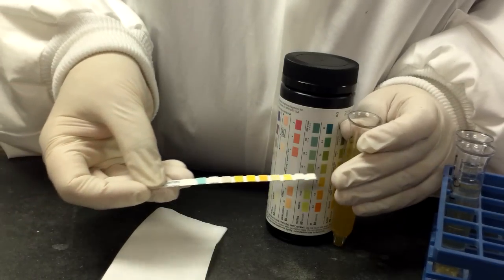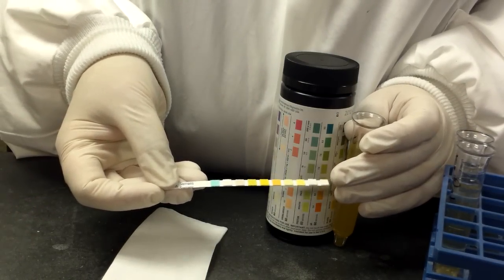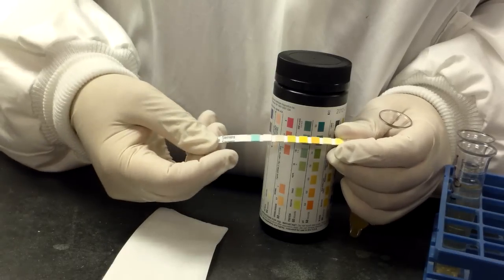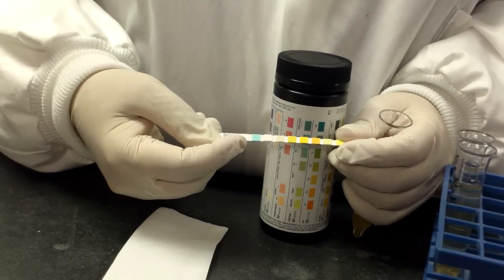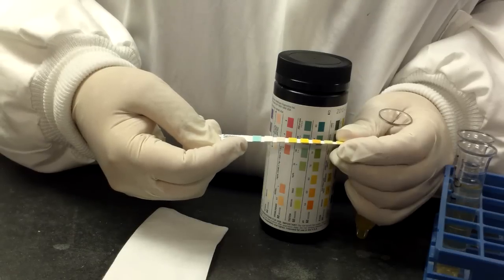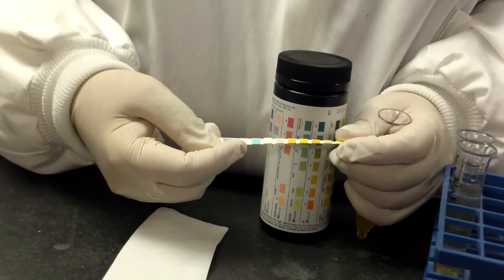When you put it in, you want to make sure you get all of the squares damp. And on this particular one, there is a small white square right here that is used by the analyzer for color comparison. We're going to ignore that in the manual count.